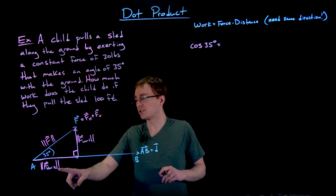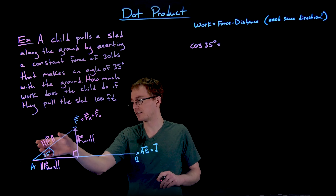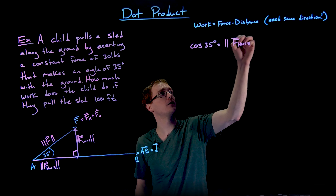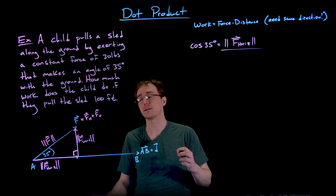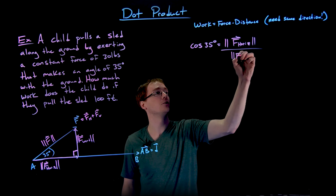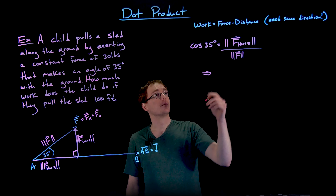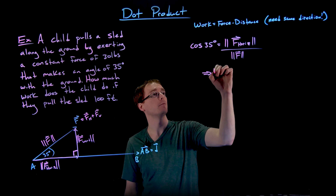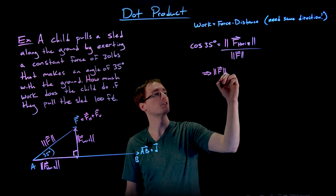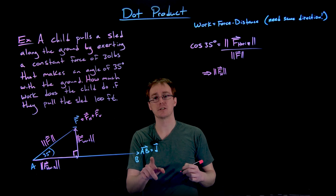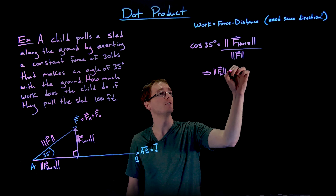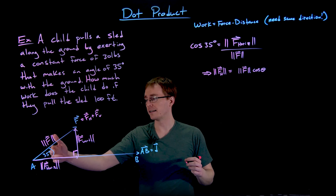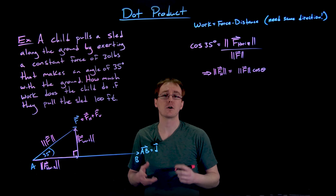From our right triangle, we know cosine of 35 degrees equals the adjacent side length divided by the hypotenuse — that's our horizontal component of our force vector divided by the overall magnitude of our force vector F. We can solve for our horizontal force magnitude by multiplying both sides by |F|. The amount of force in the horizontal direction — the same direction as our displacement vector D — equals the magnitude of our force vector F multiplied by cosine of theta, where theta is the angle between our force vector and our displacement vector.